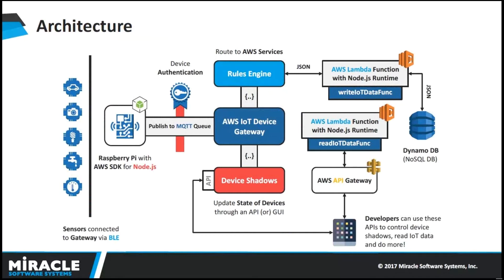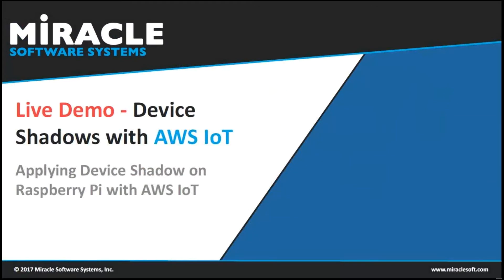This is the complete architecture: smart devices and sensors communicate to your device gateway. Through authentication, they securely communicate to the AWS IoT platform. We can use Lambda functions to trigger serverless code to any kind of database. We can use API Gateway to have an endpoint so that the mobile application or mobile user can easily access that endpoint. Let me show a quick demonstration on AWS IoT using device shadow with a Raspberry Pi.